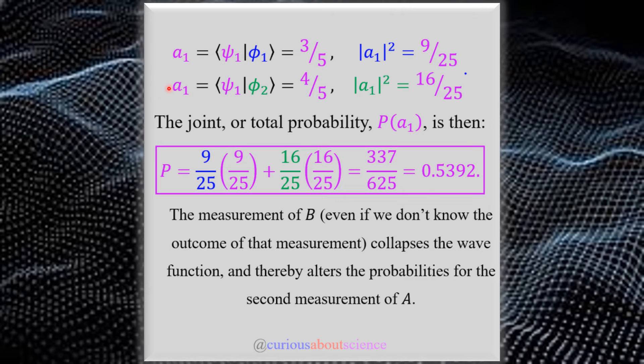A1 again, but with respect to the eigenstate phi 2 gives us 4 5ths. So square that, we get 16 over 25. What we need, since we don't know what the eigenstate is, we need the probability of the eigenstate and then the probability of what's going on within that eigenstate.